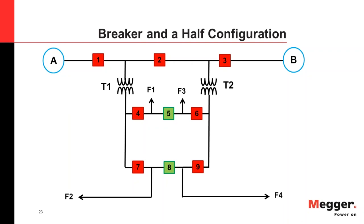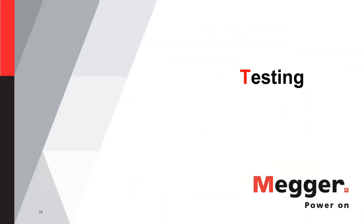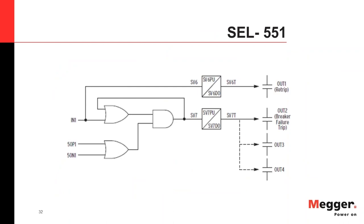Q&A on re-trip timing: The re-trip scheme, as shown in the SEL-551 example, provides a second opportunity for the same breaker to trip before a Breaker Failure is declared. It applies only to breakers with two tripping coils. The first coil fails, and rather than immediately tripping local breakers, the relay energizes the second tripping coil to give the breaker another chance to clear the fault.